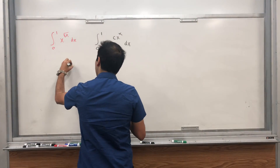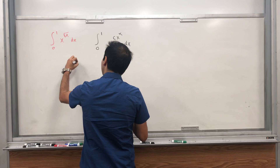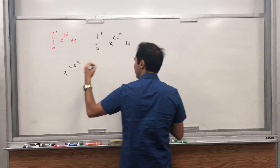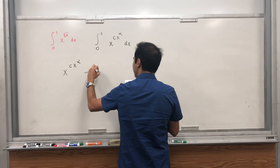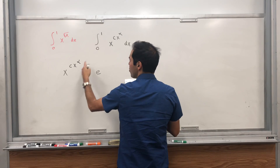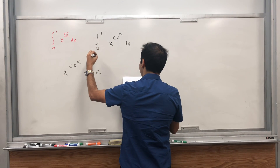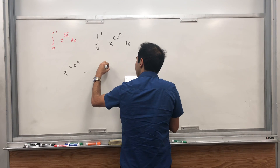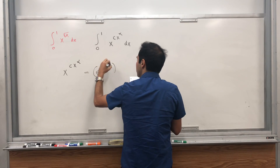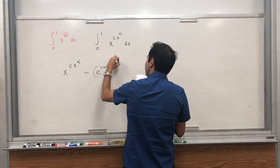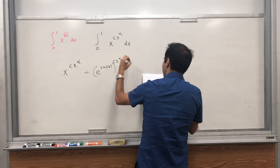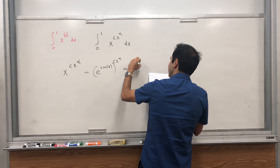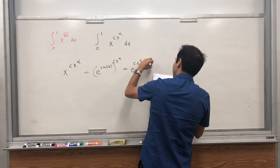So how do we start? Well, we want to write x to the cx to the alpha as e to the something. Remember, e of ln of x is x, so it's just e of ln of x to the cx to the alpha, which is the same as e to the cx to the alpha ln of x.